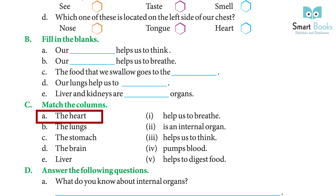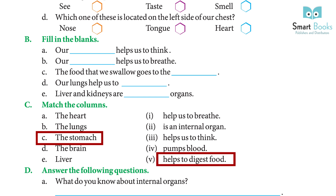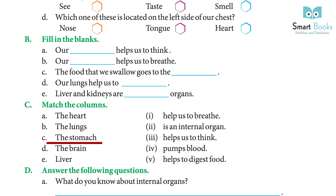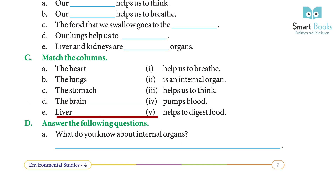Match the columns. A: The heart — Answer: Pumps blood. B: The lungs — Answer: Help us to breathe. C: The stomach — Answer: Helps to digest food. D: The brain — Answer: Helps us to think. E: Liver — Answer: Is an internal organ.